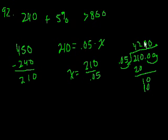So her sales were $4,200, but that's not her total sales. Remember, she only gets 5% on her sales above $800. So she sold $4,200 more than $800 that week. Her total sales were $4,200 plus $800, which is $5,000. And that's choice E.